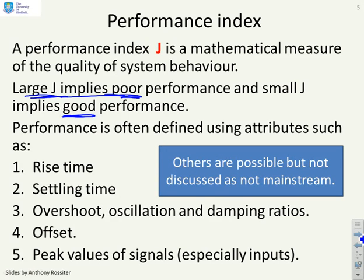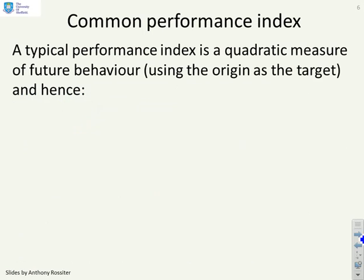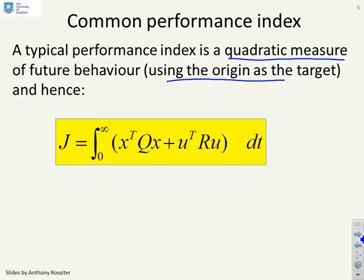Instead, a typical performance index we're going to use is called a quadratic measure of future behavior. Here you'll notice we're using the origin as the target for convenience, but you don't have to. There are alternatives but we won't cover those to save you the algebra.